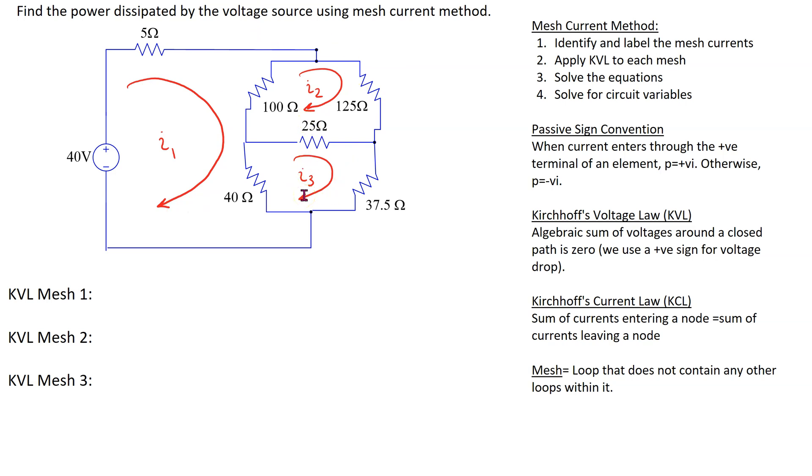Mesh current method relies on the application of Kirchhoff's voltage law, which states that the algebraic sum of voltages around a closed path is zero. In writing the KVL equation we make use of Ohm's law and passive sign convention. So we use positive sign for voltage drop and negative sign for voltage rise.